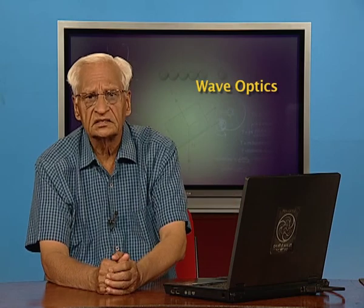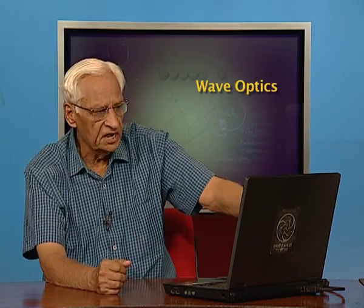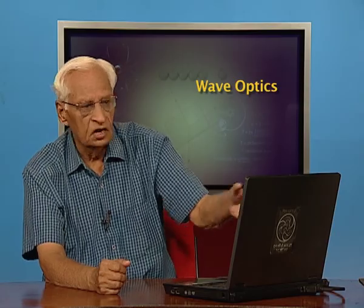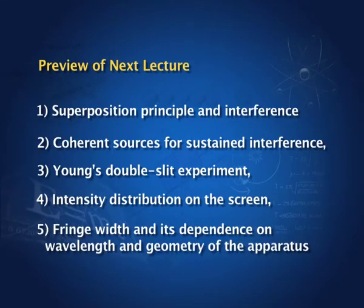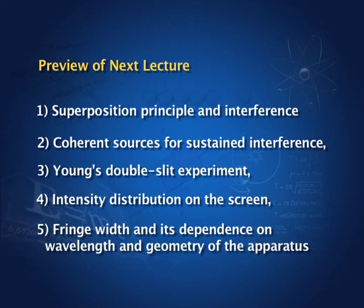We will continue with this in the next lecture. Specifically, we shall recall the superposition principle, and from it we go to interference. For interference, we need special sources called coherent sources. We shall also describe Young's double slit experiment, the intensity distribution and fringe width on the screen, which allows us to determine the wavelength of light in the laboratory.